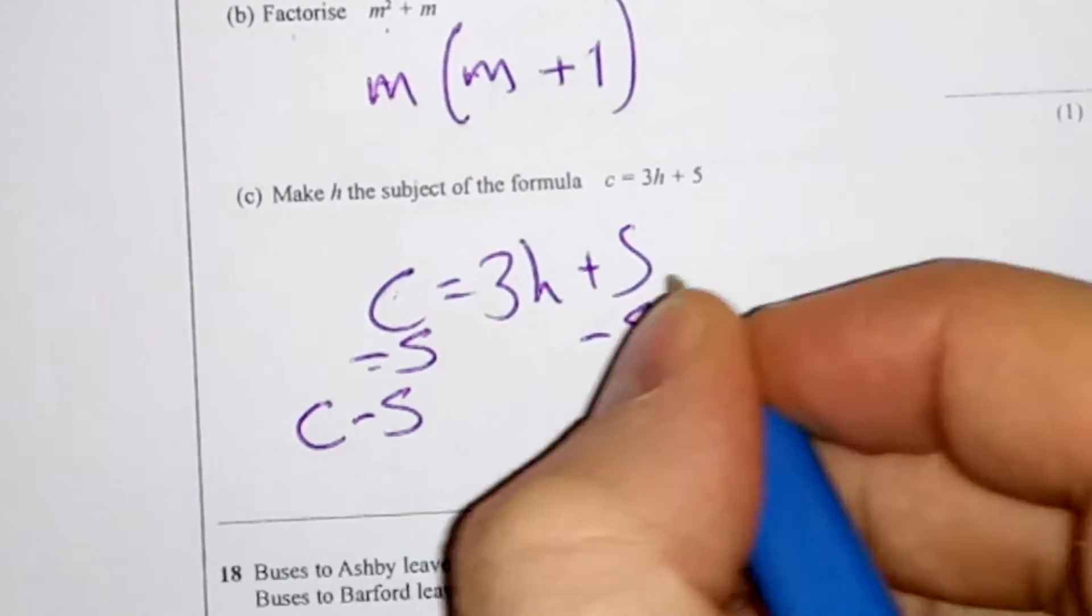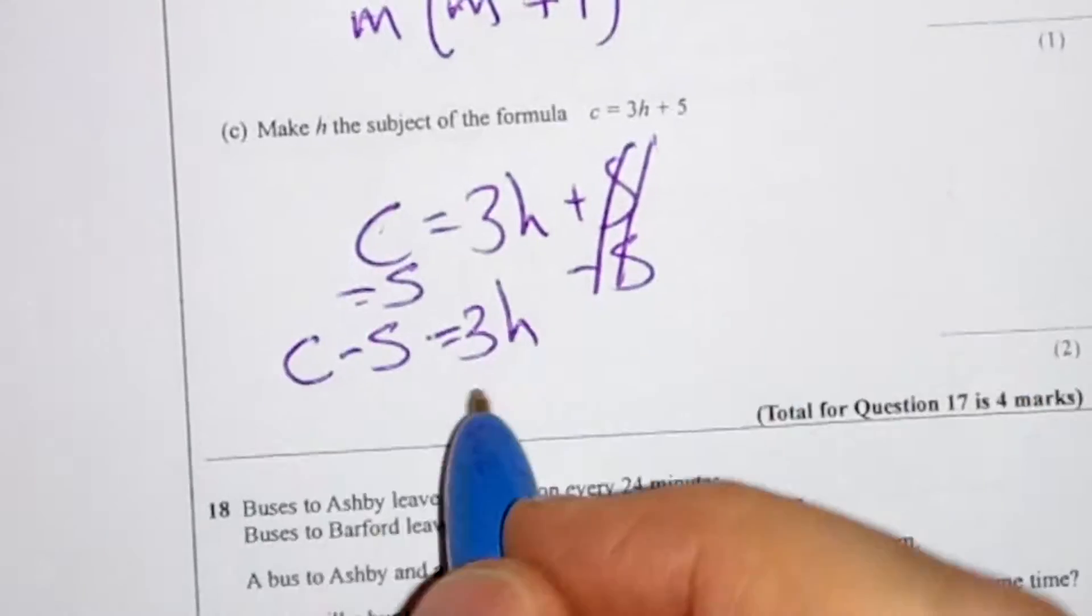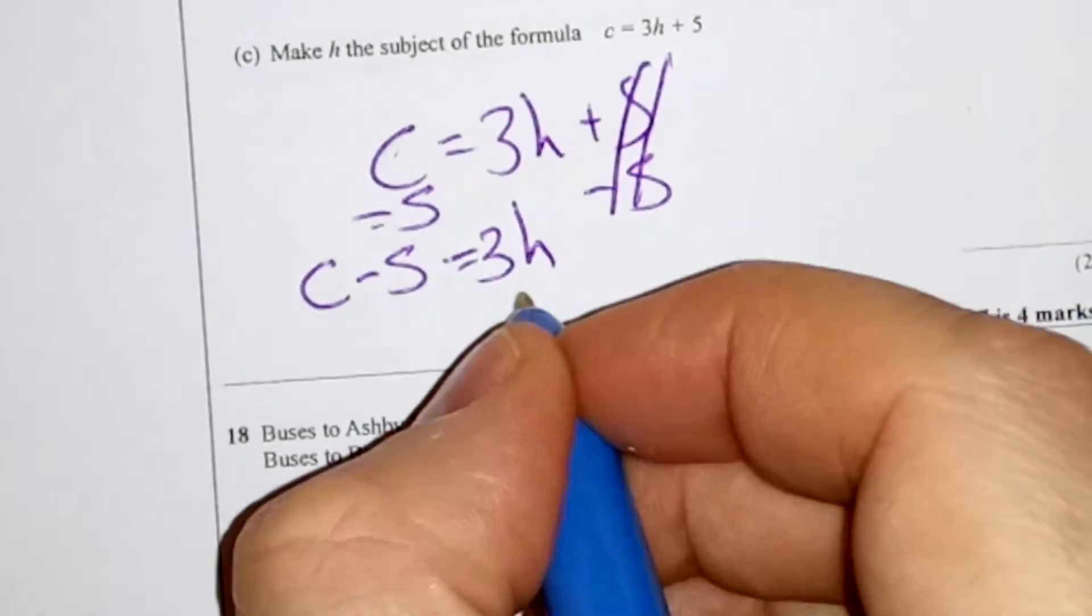c minus 5 is just c minus 5. These cancel out. Because here we're timesing by 3, we've got to do the opposite, which is dividing by 3.